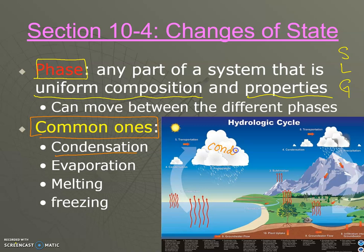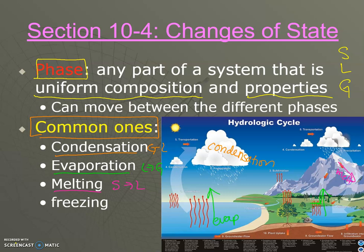Condensation is the change from a gas to a liquid — you'd see this up in the clouds. Evaporation is when a liquid goes to a gas, which happens down in the sea or a lake. Melting is when a solid goes to a liquid, like mountain snow melting to make lakes and streams. Freezing is the change from a liquid to a solid, which happens when it's very cold.